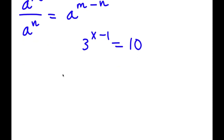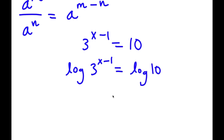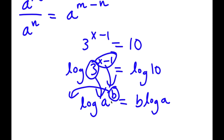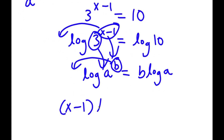So now to solve this, I'm going to take the log on both sides. So now I have log of 3 to the power of x minus 1 is equal to log 10. An important property of logarithms is that if I have something in the form log a to the power of b, I can move the exponent b to the front of the logarithm — so this equals b times log a. Here, 3 is a and x minus 1 is b, so I get x minus 1 times log 3 is equal to log 10.